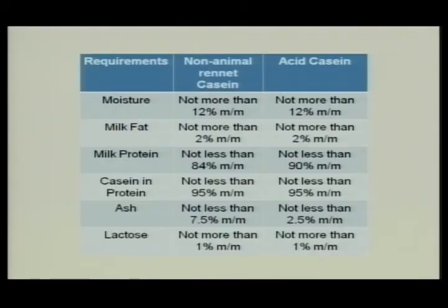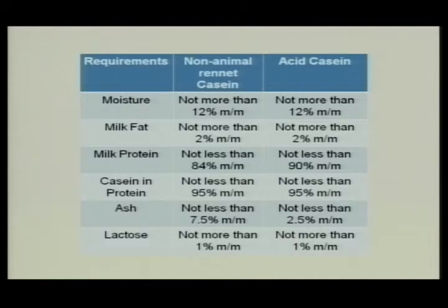FSSAI has laid down standards for moisture, milk fat, milk proteins, casein in the protein, ash, and lactose present. Two types of casein are defined: non-animal rennet casein, where casein may be precipitated by hydrochloric acid, sulfuric acid, or lactic culture; and acid casein, where casein may be precipitated by hydrochloric acid and sulfuric acid but not by rennet.